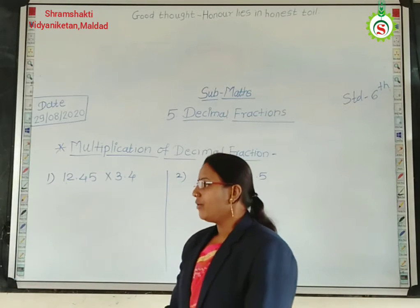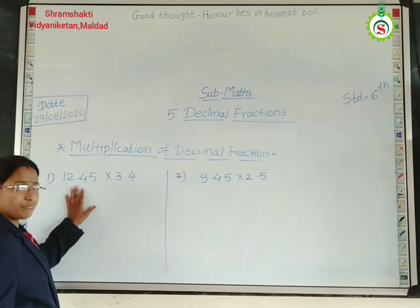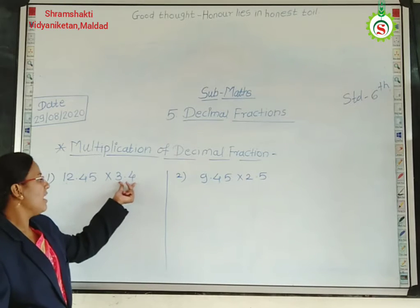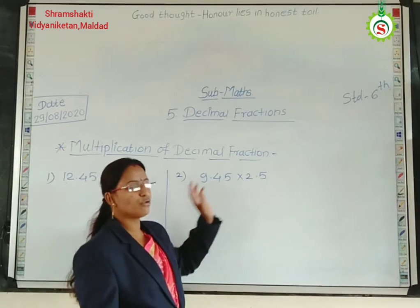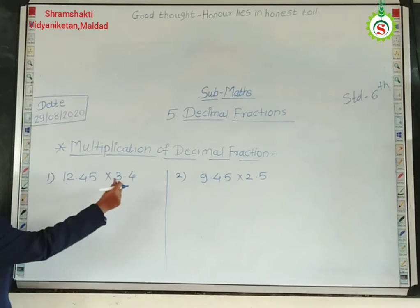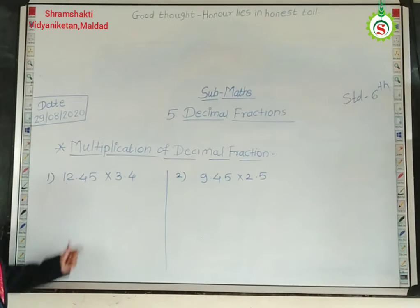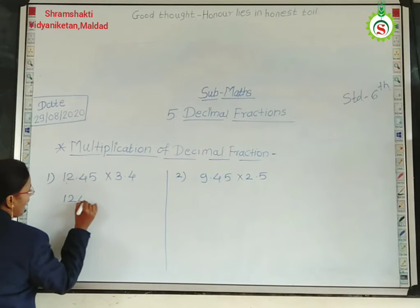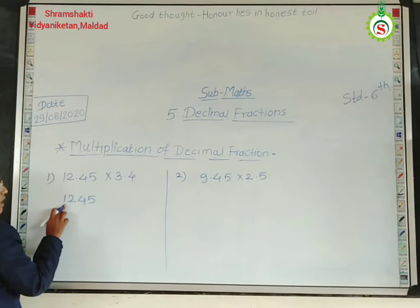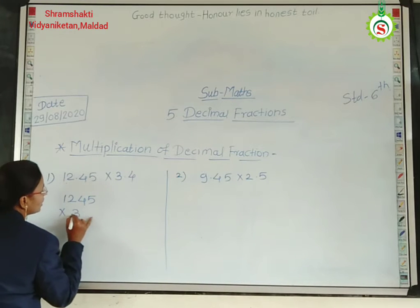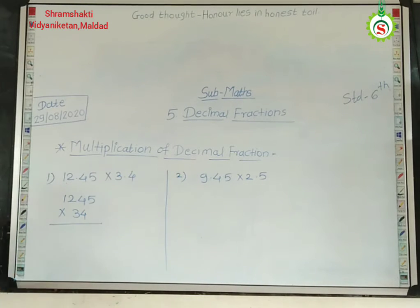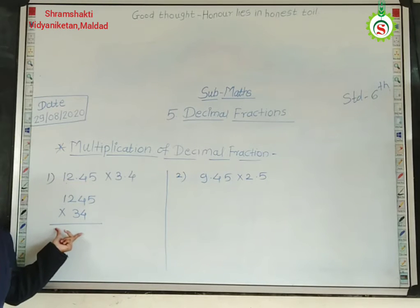Now we will see the multiplication of both decimal fractions — meaning here also one number is a decimal fraction and here also the other number is a decimal number. Same, you repeat the same step — ignore the decimal point. Write down your example as it is: 1245 into 334. Ignore both the decimal points and do the multiplication using your steps.